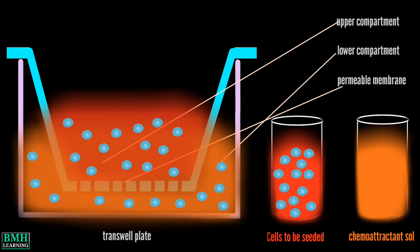The membrane is usually coated with some extracellular matrix component, for example collagen, which facilitates both adherence and migration.